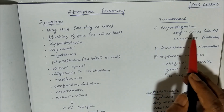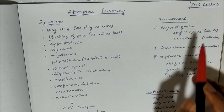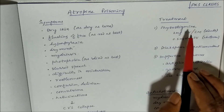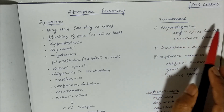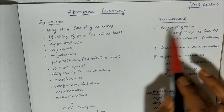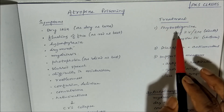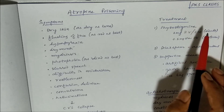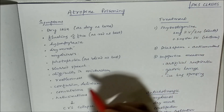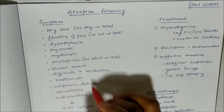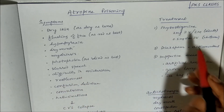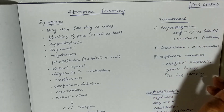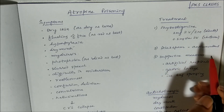The cholinergic drug of choice is physostigmine, because it can cross the blood-brain barrier — it is the only natural alkaloid that can cross the blood-brain barrier — and therefore it can counter the CNS toxicities of atropine poisoning.